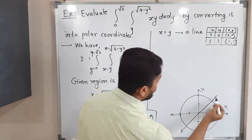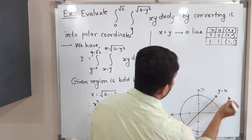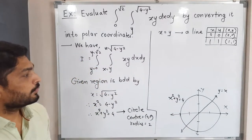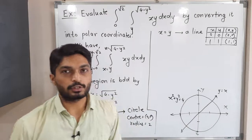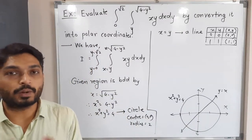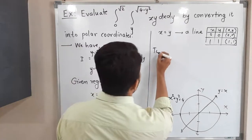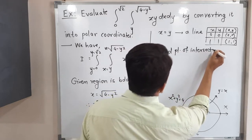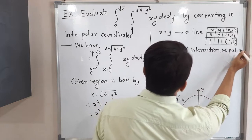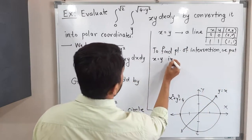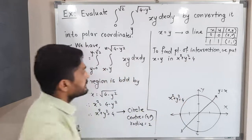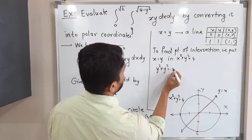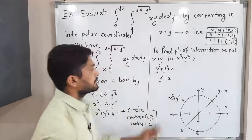So we have the line y = x and the circle x² + y² = 4. We need to find their point of intersection. Substituting x = y into x² + y² = 4, we get y² + y² = 4, which gives 2y² = 4, so y² = 2.